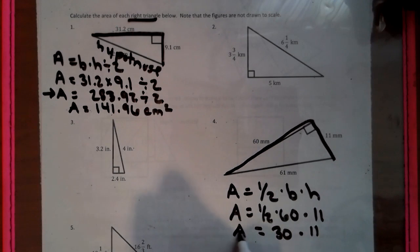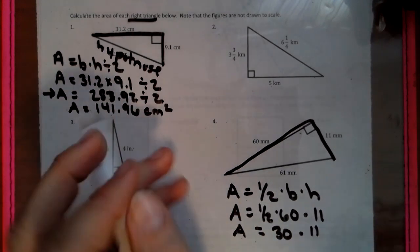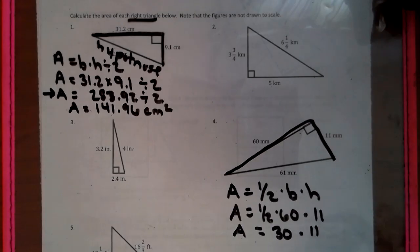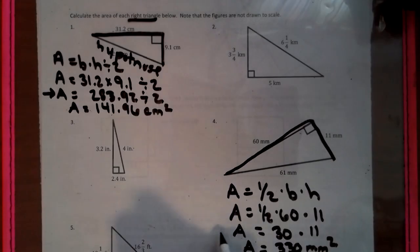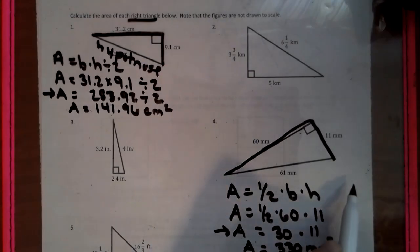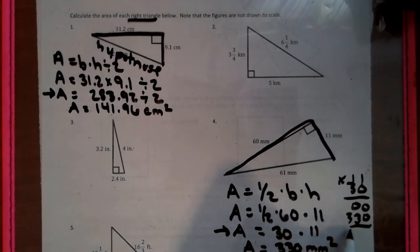And then you just need to take it to the side of your paper and do 30 times 11, which is 330 millimeters little two. Now, once again, that line is optional because half of 60 is 30. 30 times 11, you can just do on the side of your paper to get your final answer.